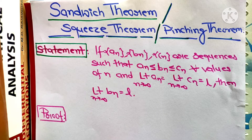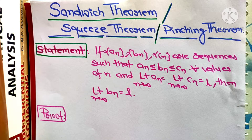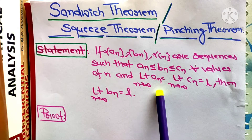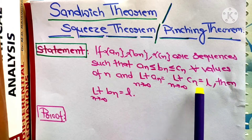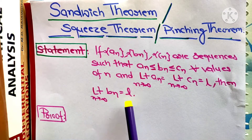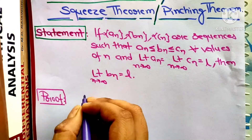Hello guys, myself Preeti Divyani, and today in this video we are going to prove the Sandwich theorem — you may also call it the Squeeze theorem or Pinching theorem. The statement is: if aₙ, bₙ, cₙ are sequences such that aₙ ≤ bₙ ≤ cₙ for all values of n, and the limit as n tends to infinity of aₙ equals the limit as n tends to infinity of cₙ equals l, then the limit as n tends to infinity of bₙ also converges to l.